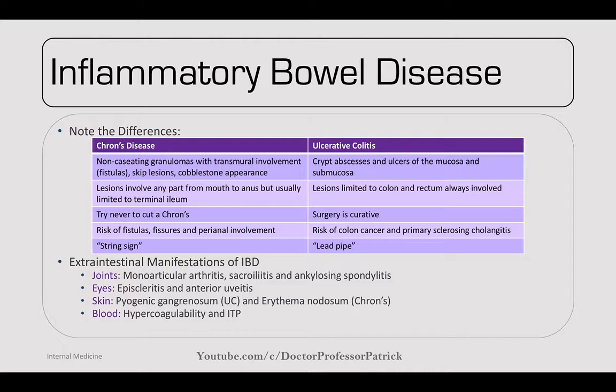Extra-intestinal manifestations of IBD: in joints, monoarticular arthritis — one of the seronegative spondyloarthropathies; sacroiliitis and ankylosing spondylitis. In the eyes, increased risk of anterior uveitis. On skin, UC is associated with pyoderma gangrenosum — a large fungating-looking aseptic lesion. Erythema nodosum in Crohn's — painful red nodules on the shins. In the blood, hypercoagulability and ITP.